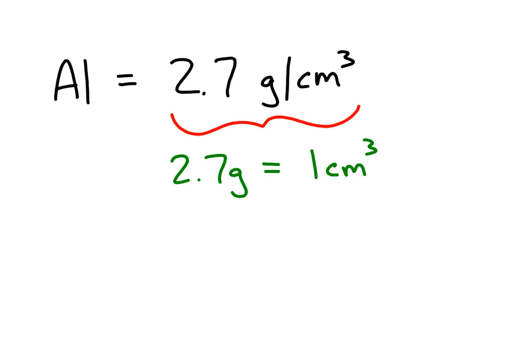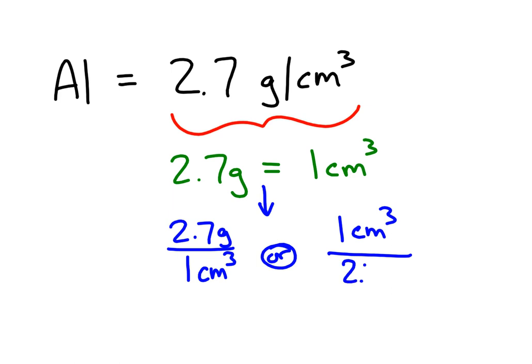So I can use this equivalency statement and make a conversion factor, one of two things. I can put it as 2.7 grams for every 1 cubic centimeter, or I can have it as 1 cubic centimeter over 2.7 grams. And of course, which conversion factor I choose is going to be dependent on what information I'm given to start with.